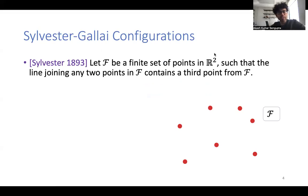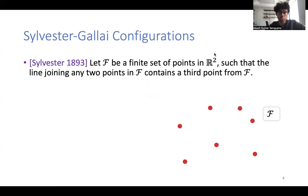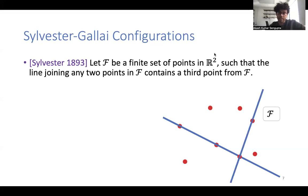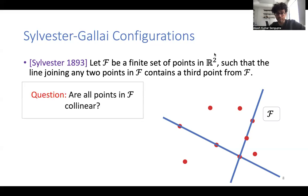The story goes back to 1893 where Sylvester asked this question: given a finite number of points in R2, suppose the set of points satisfies the following property — that the line joining any two points from our set contains a third point from our set. For example, if you draw a line there is a third point, and again if you draw another line joining two points there should be another point on it. Sylvester asked: does this mean that all the points have to be on the same line?